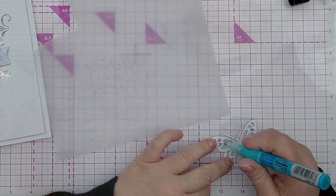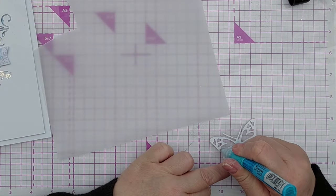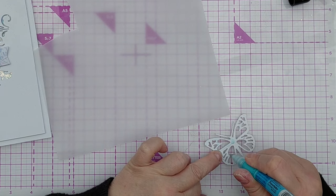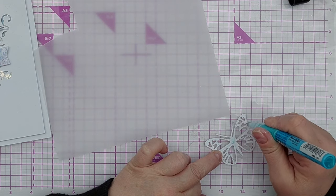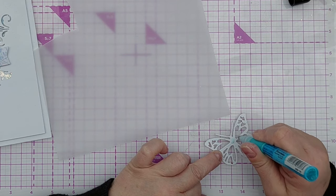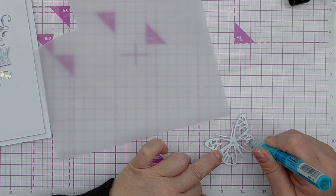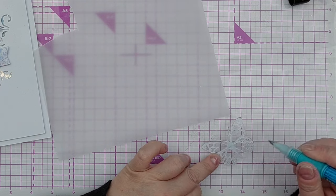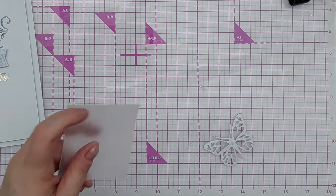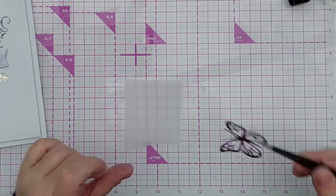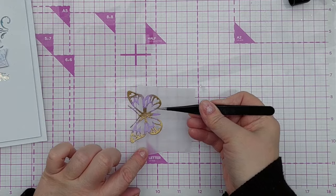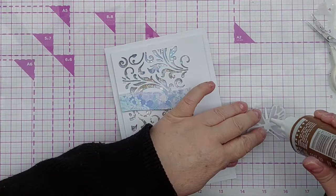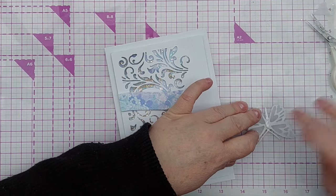I decided I wanted to add some vellum to my butterfly so that it stood out against the fairly busy aperture area. So I just put some more of the zig two way glue pen on the back, let it dry a little bit and then added it to some vellum and used my detail scissors to cut around it. So now my butterfly is a little bit more solid, although the wings are translucent so you can still see what's going on behind.